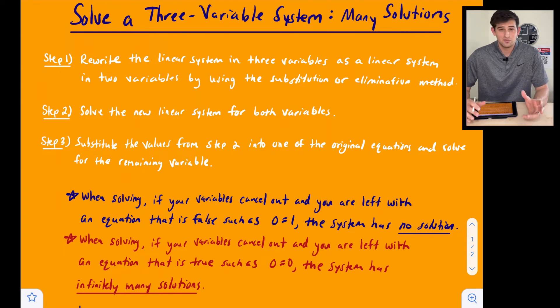Before we get into the example, let's go over our steps in order to solving our three variable system. Step one, we want to take our three variable system with three equations and write it as two equations with two variables. So we're going to do that by the process of elimination or substitution. I would probably prefer elimination.